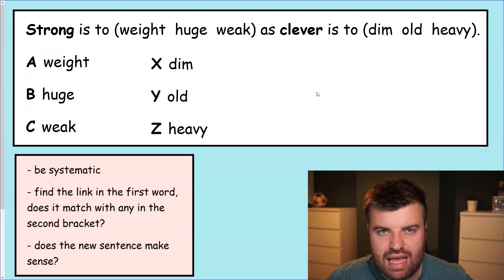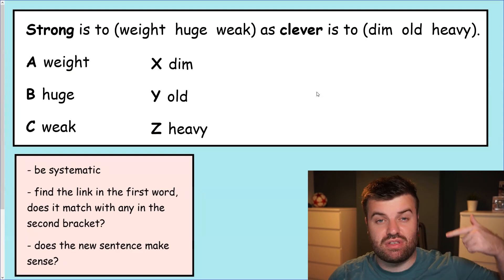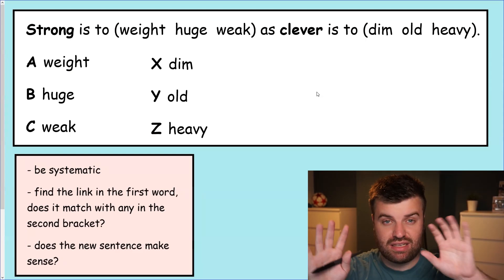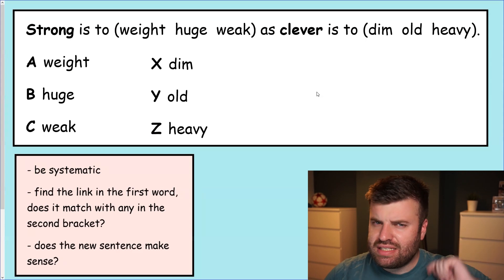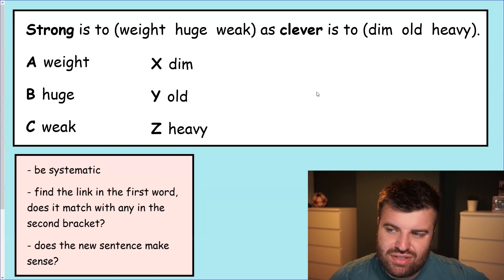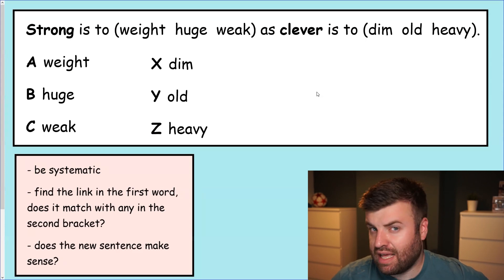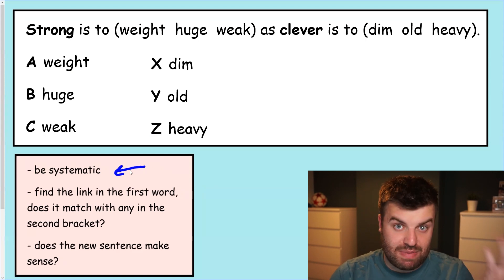Let's take a look at another one here and just be aware that the way the link is made is not always the same. For example, last time we had professions and what they do. This one is different. Let's take a look. Strong is to weight, huge and weak as clever is to dim, old and heavy. Okay, well let's follow our options at the bottom. Let's be systematic.